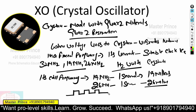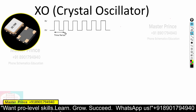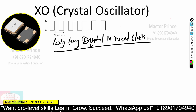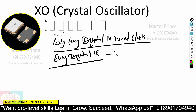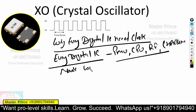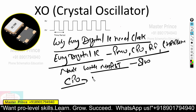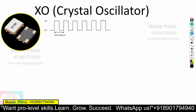Now let's understand why every digital IC needs a clock. Every digital IC — whether PMU, CPU, RF, or charging IC — is made with MOSFETs. The MOSFET works like a tiny switch inside every IC. For example, a CPU is made with millions of MOSFETs, meaning there are millions of tiny switches inside the CPU.